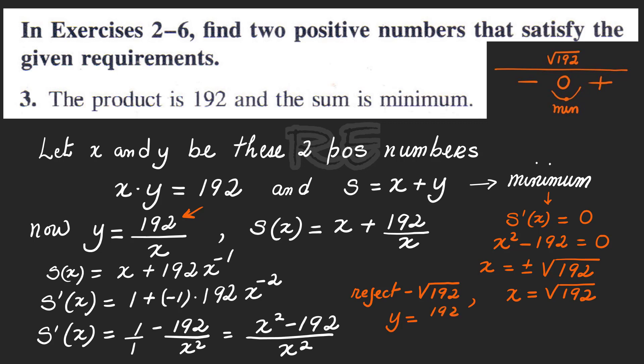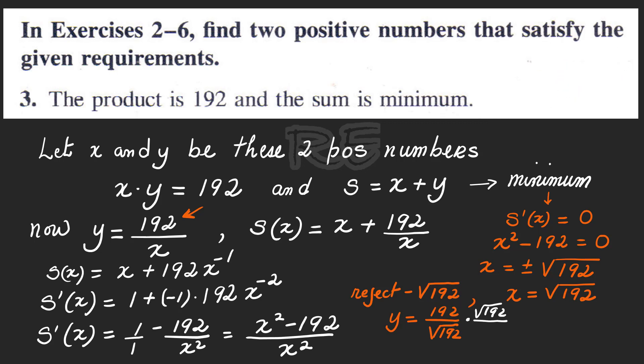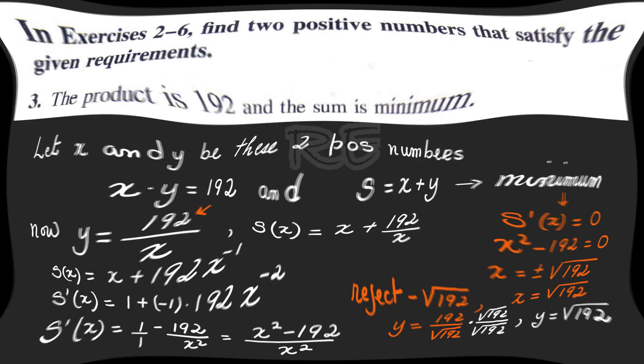To get y, we're going to use y equal to 192 over x. It's 192 over square root of 192. When we rationalize, multiply by square root of 192 over square root of 192. We get y equal to x, which is y equal to square root of 192.